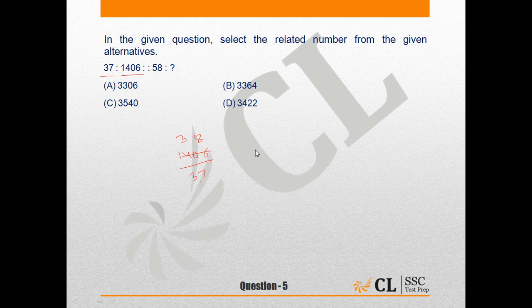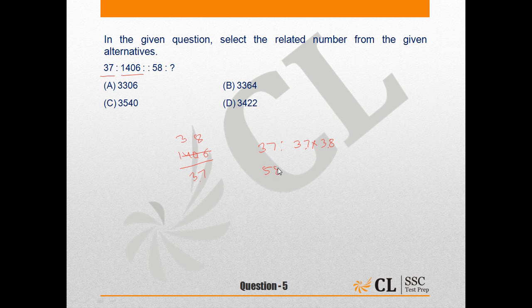So the relationship is 37 is to 37 into 38, that means the next number to 38. So the same should be done for 58, that is 58 is to 58 into 59.